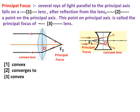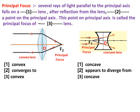For a concave lens, several rays of light parallel to the principal axis fall on the lens. After refraction from the lens, the rays appear to diverge from a point on the principal axis. This point is called the principal focus of the concave lens, represented as F1. The definition is similar for both lenses, with only some words changed.